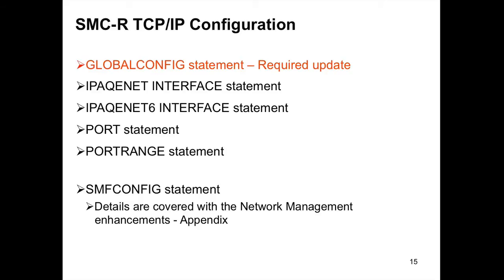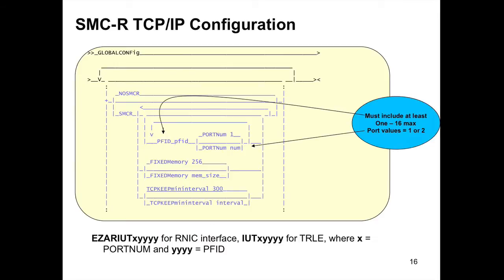That's it for the hardware configuration definition. Now for the TCP/IP configuration. On this chart, only one item is in red — that's the only required TCP/IP configuration. The others are optional. The global config is the only thing you have to configure for the RoCE Express for SMCR. The required configuration: you likely have an existing global config for your TCP stacks. The new keyword is SMCR; the default is no SMCR, so if you do nothing, you don't get SMCR.